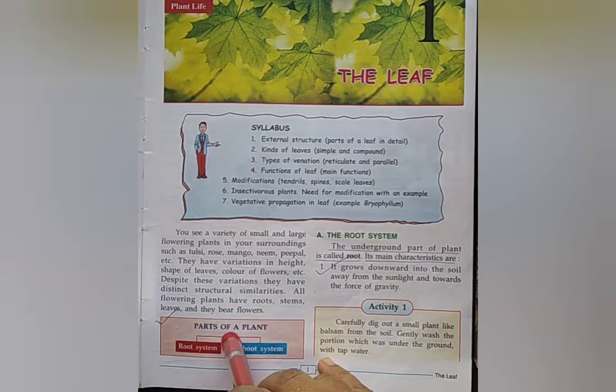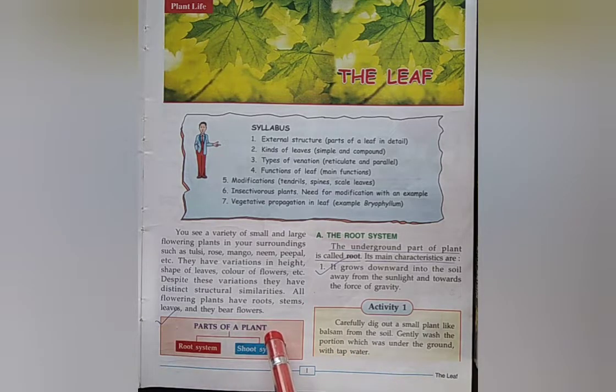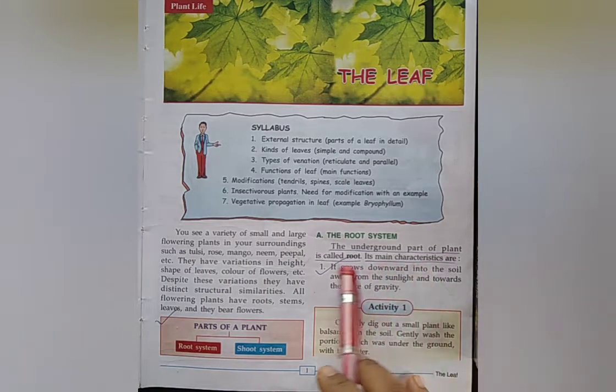The question and answer of the chapter, the leaf parts of a plant. Question number one: Write the name of the parts of a plant. Answer: Root system, shoot system. Next question: What is root? The underground part of a plant is called root.